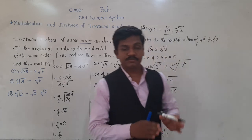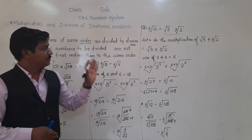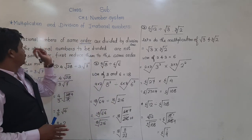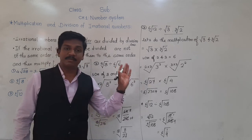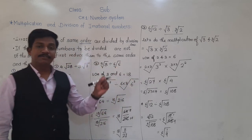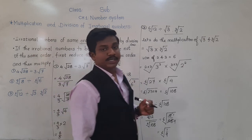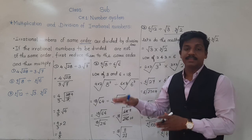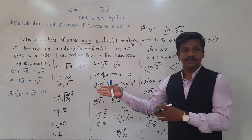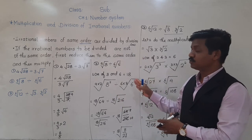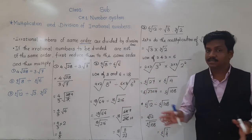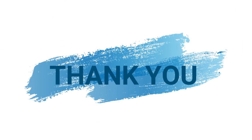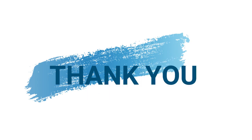So in this way we have to perform the division of irrational numbers. Multiplication and division both follow the same rules. First rule: irrational numbers of same order can be multiplied or divided. Second rule: if the orders of two irrational numbers are not same, first we have to make them same, and then multiply or divide. If you have any doubt, feel free to ask. Thank you for today. Have a nice day.